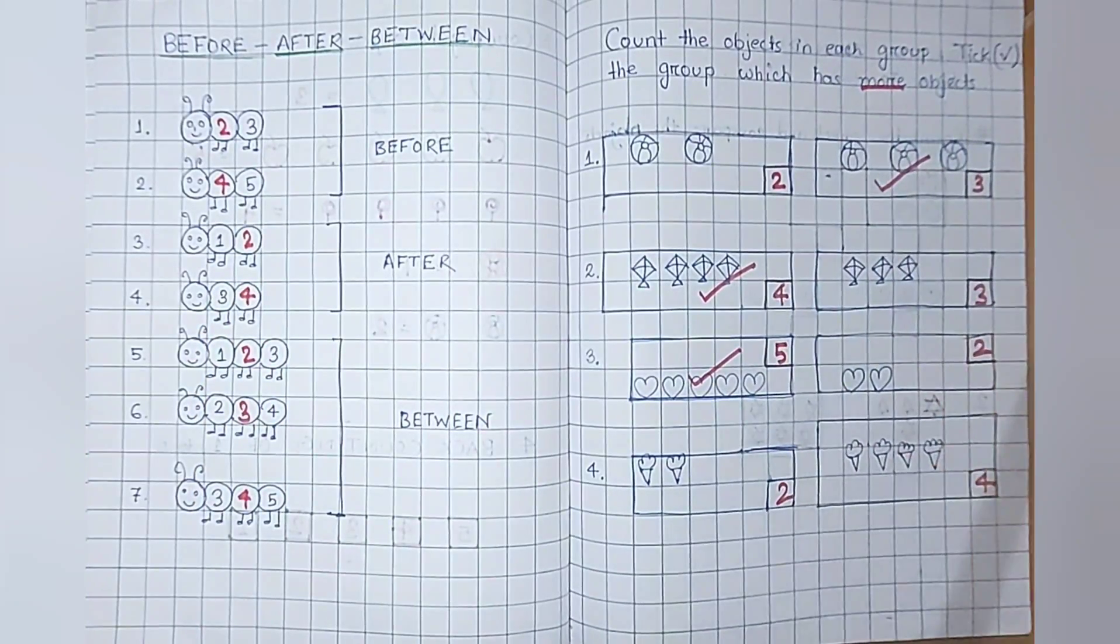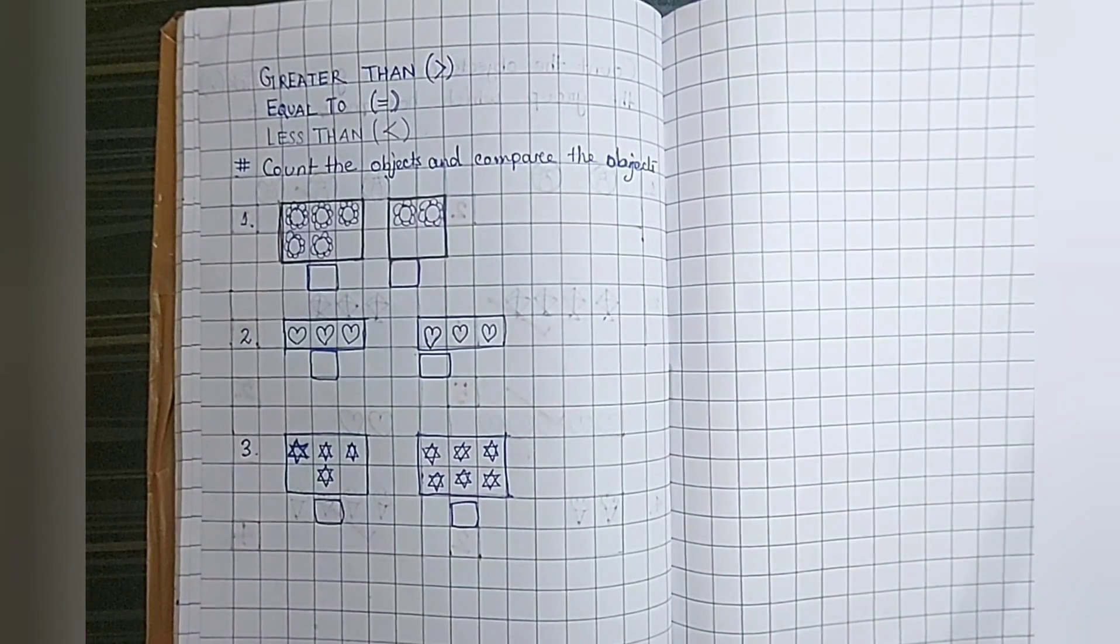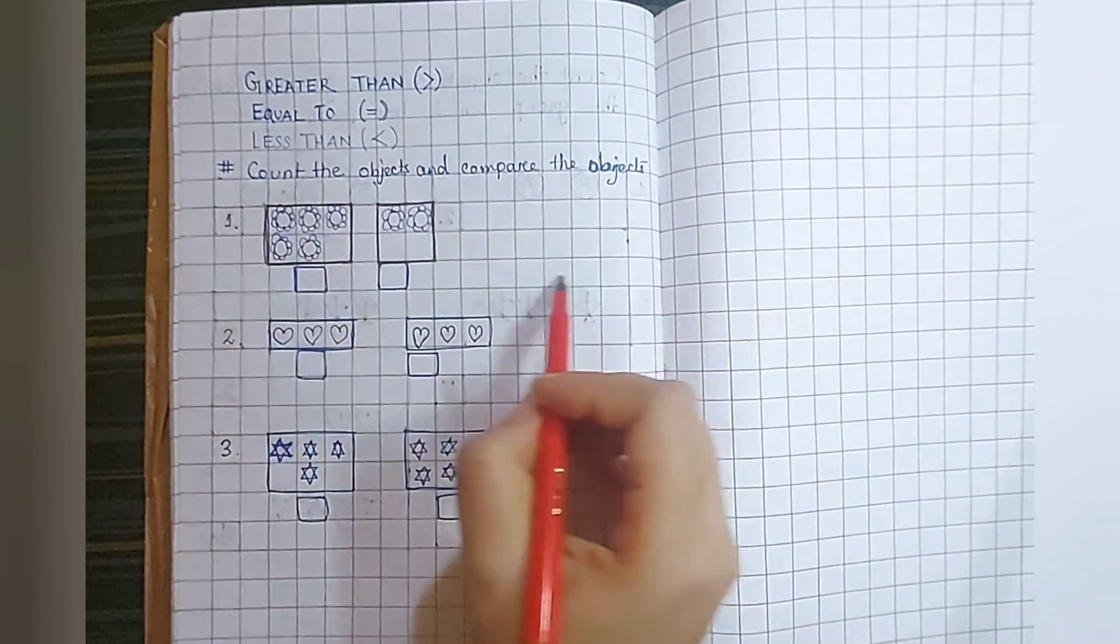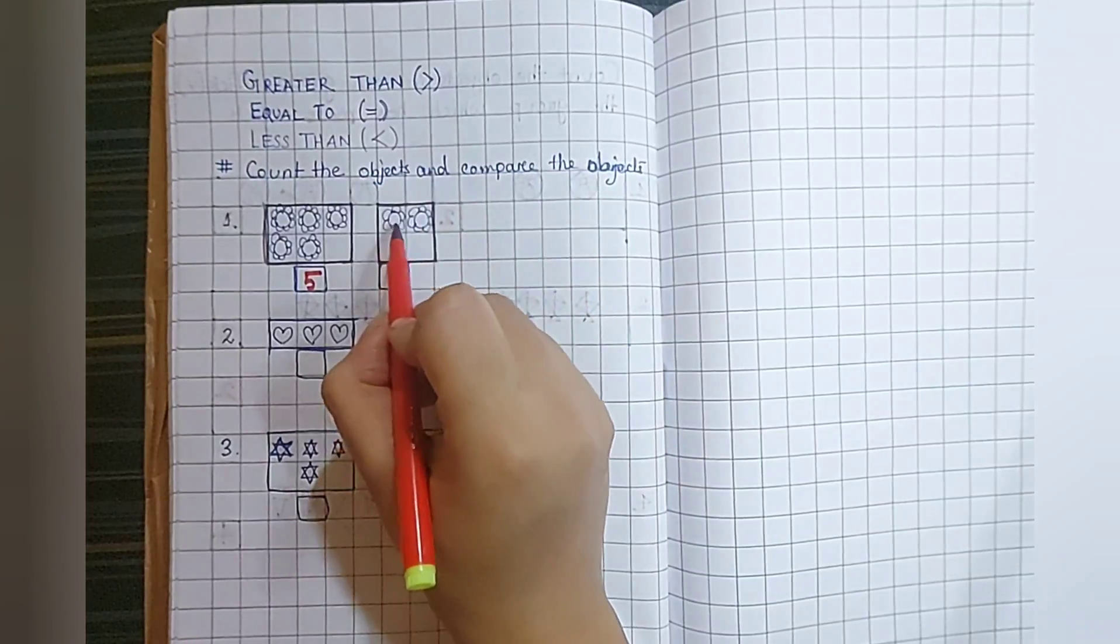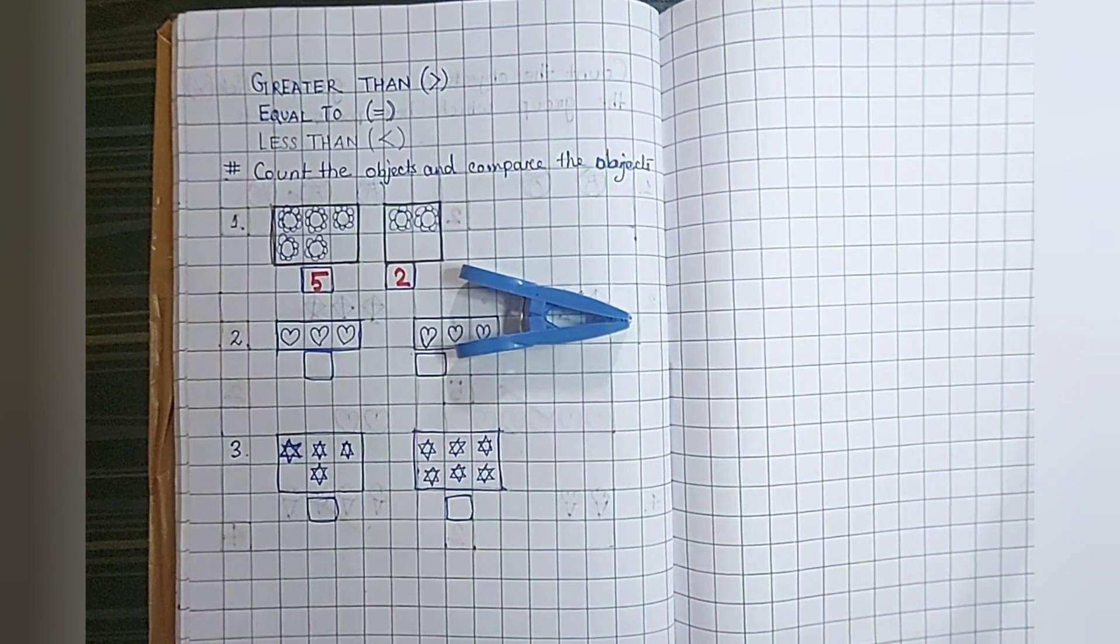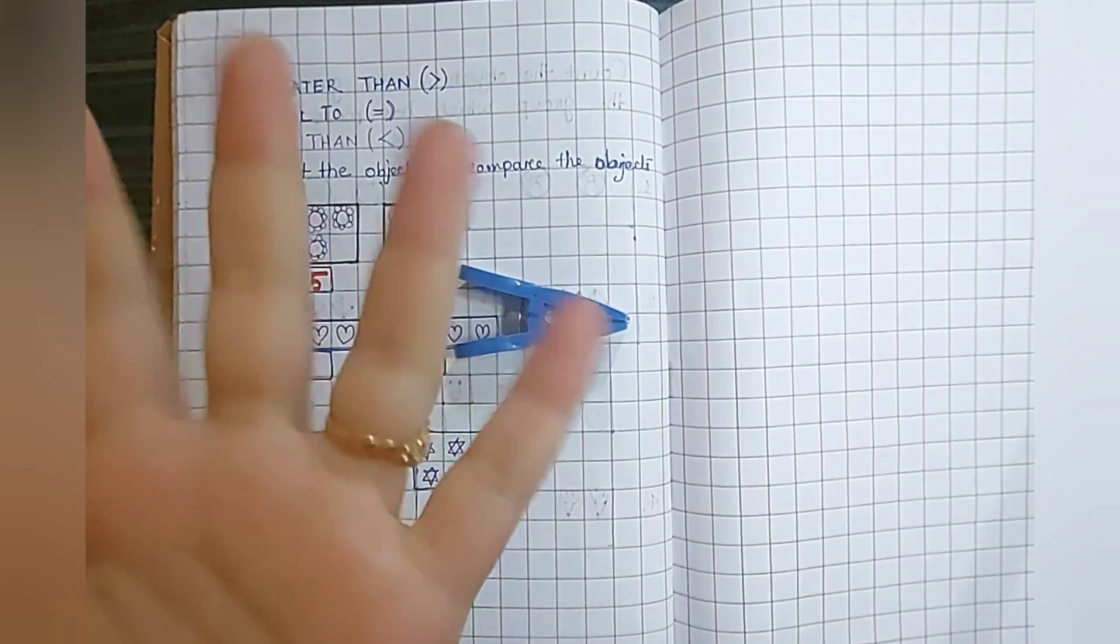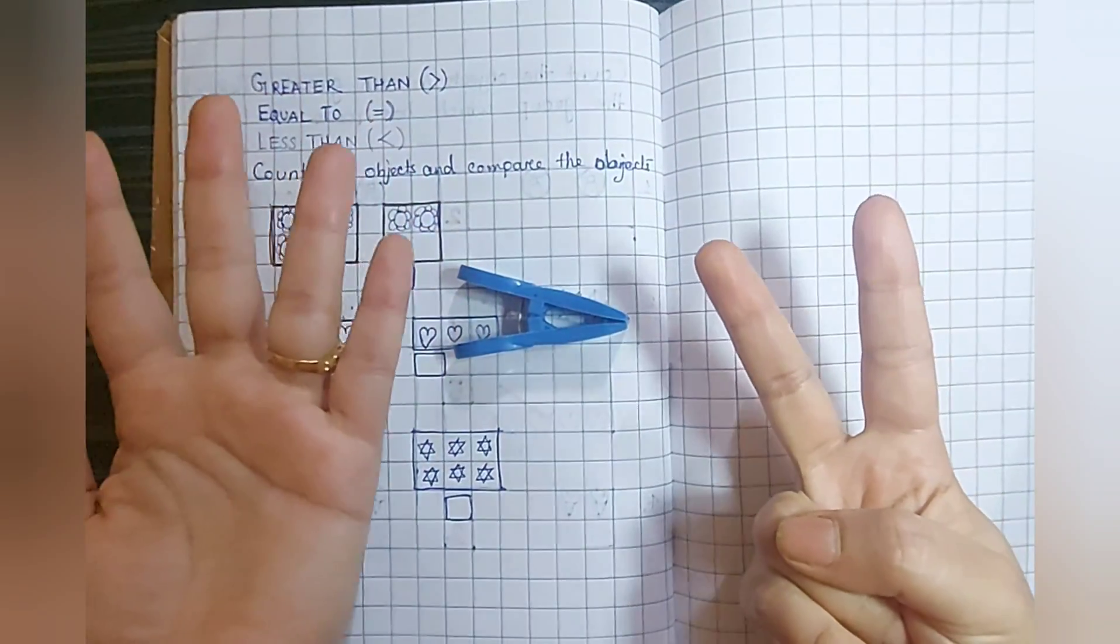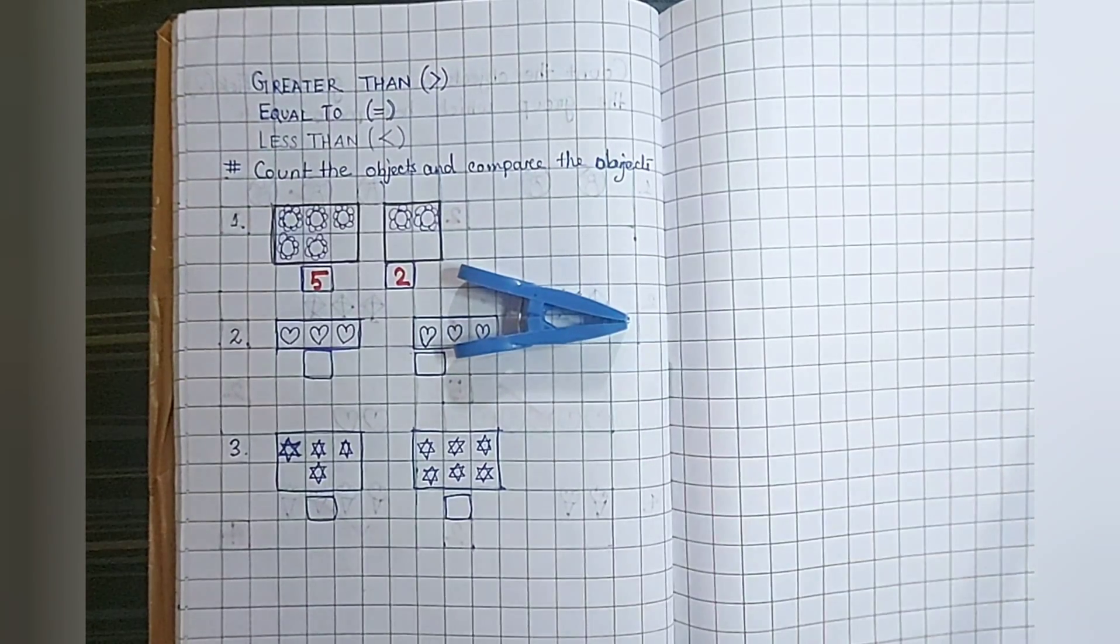Then tick. Next, greater than, equal to, or less than. In this question, greater than, equal to, or less than, first count the objects. One, two, three, four, five. Five flowers. Here one, two. Two. Now see, this is a clip. It has two sides, this one and this one. Now through your fingers you can check which number is big. This one is five. And this one, this group is two. Now you can check which group is big or more. This group, first group.